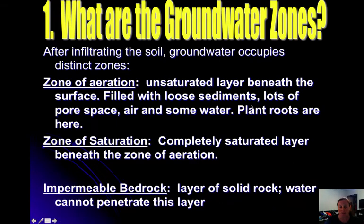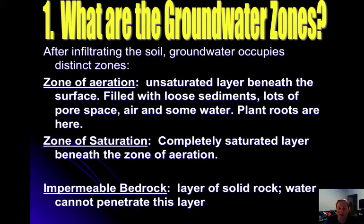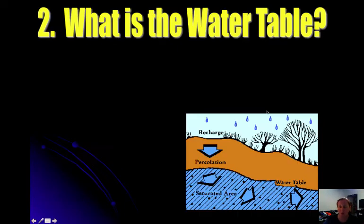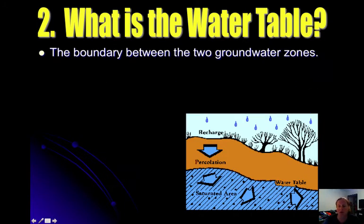The zone of saturation is completely full of water. Once you get to the area of completely solid rock, this is your impermeable bedrock layer — water cannot go through. Impermeable means water cannot penetrate, while permeable means it can. A raincoat is a good example: anything waterproof is impermeable. The water table defines the boundary between the zone of aeration and the zone of saturation.